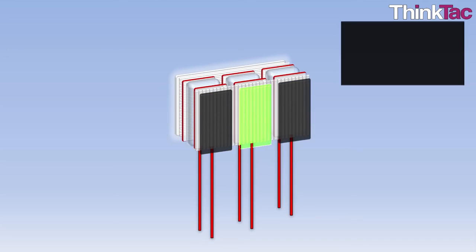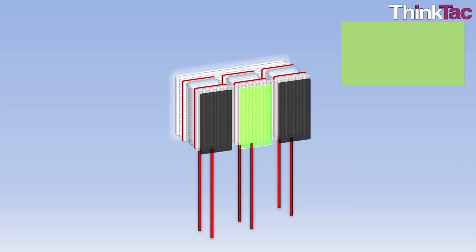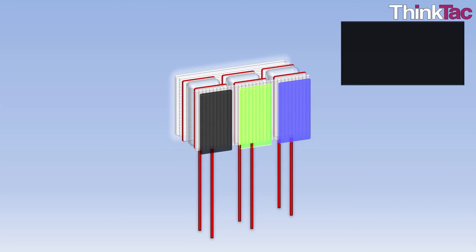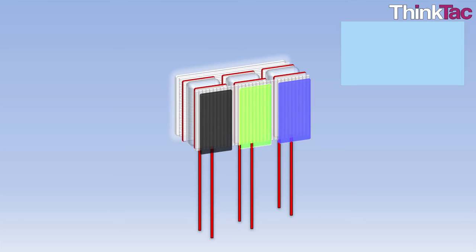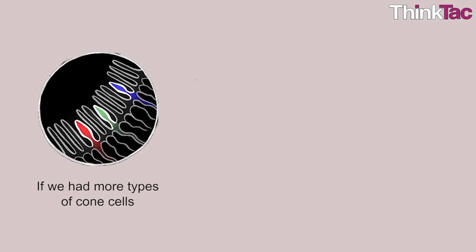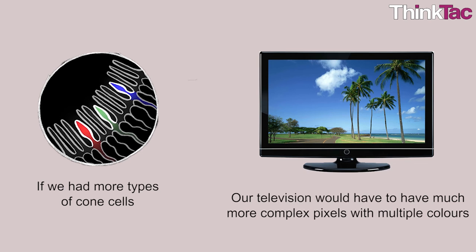So when green is lit, you see green. When the green and blue ones are lit, we see cyan, and so on. Imagine if we had more types of cone cells - our televisions would have to have much more complex pixels with multiple colors.